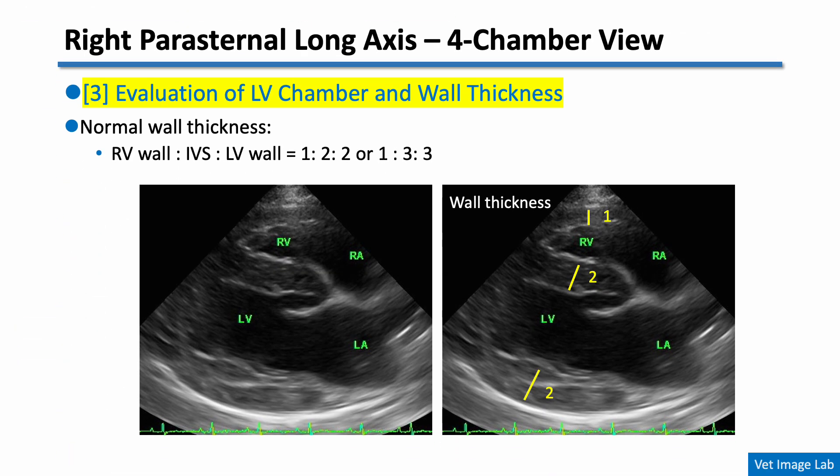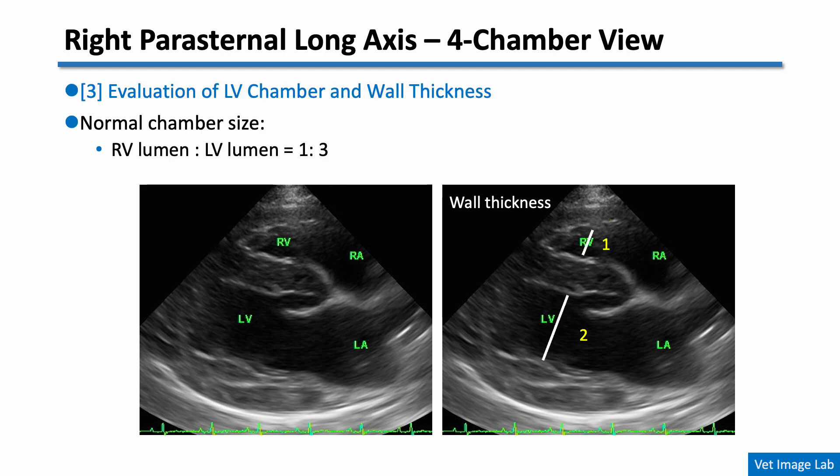Now let's move on. In this four-chamber view, you should assess the left ventricular chamber and wall thickness. Specifically, check the relative thickness of three components: the right ventricular wall, the interventricular septum, and the left ventricular free wall. The right ventricular wall is much thinner than the septum and the LV free wall — normally the ratio is approximately 1:2:2, or in some dogs 1:3:3. You should also evaluate the size of each ventricular chamber. Normally, the right ventricular cavity is approximately one-third the size of the left ventricle.